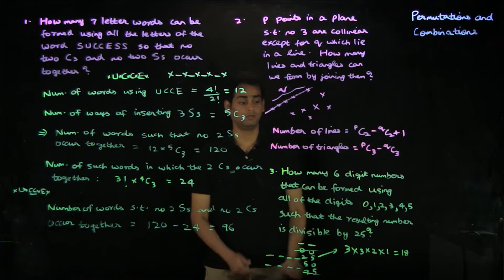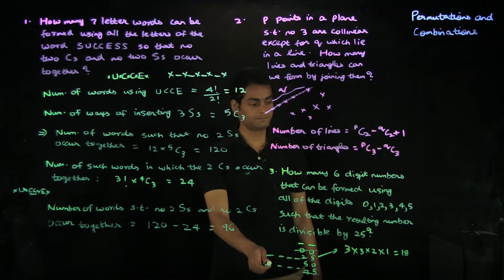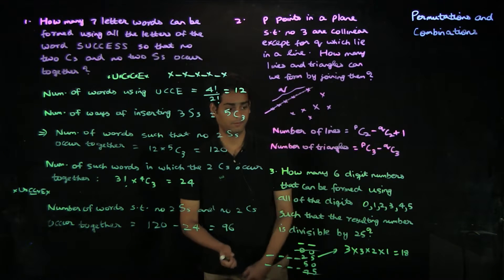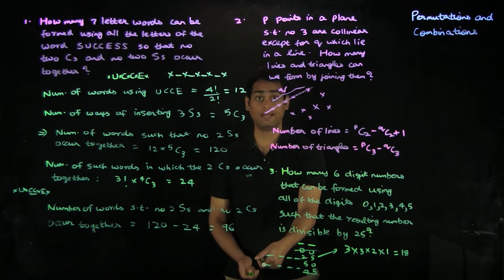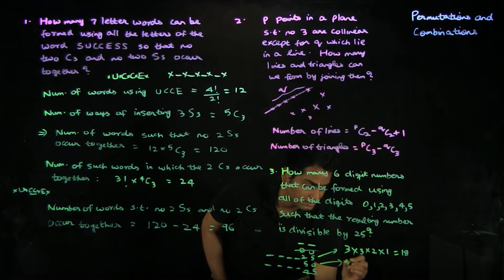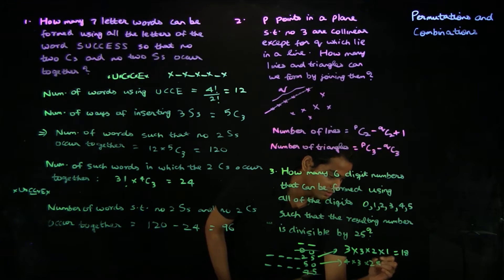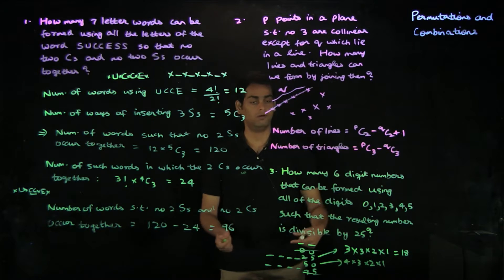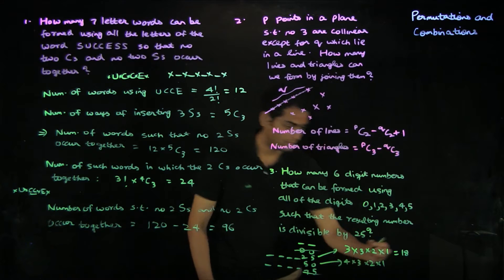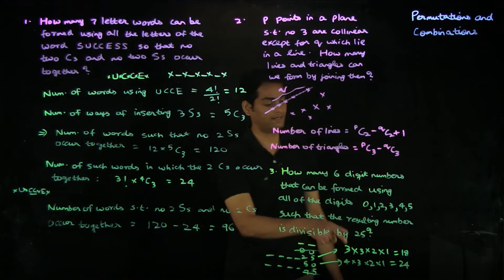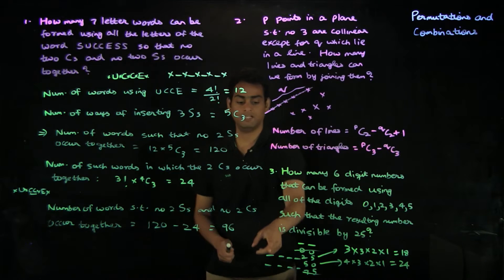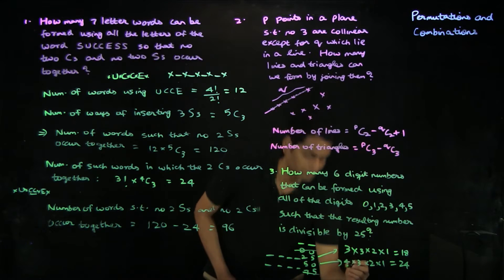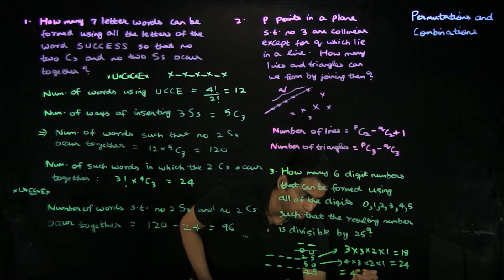When the last two digits are 50, the first digit can be any of the four remaining numbers — 1, 2, 3, or 4 — since 0 is already used. So the first digit has four choices, the second has three, the third has two, and the fourth has one. This is 4 factorial, which is 24. The reason it's 4 factorial here (unlike the previous case) is that 0 is already eliminated from the first position. The total number of valid six-digit numbers is 18 plus 24, which is 42.